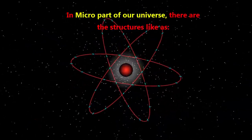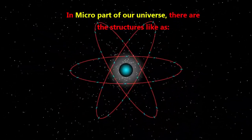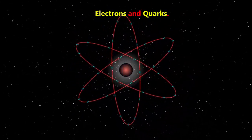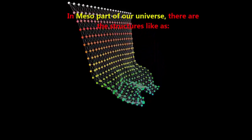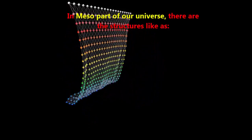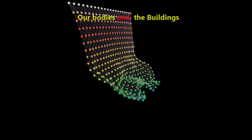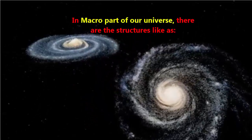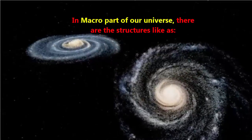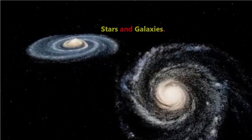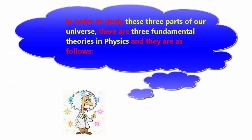In the micropart of our universe, there are structures such as electrons and quarks. In the mesopart of our universe, there are structures such as our bodies and our buildings. In the macropart of our universe, there are structures such as stars and galaxies.